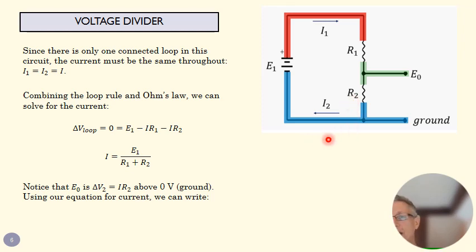Because I know down here my voltage is zero. And so if this is a voltage change of delta V2, which is the same as IR2, then I know what my voltage here at E0 is.